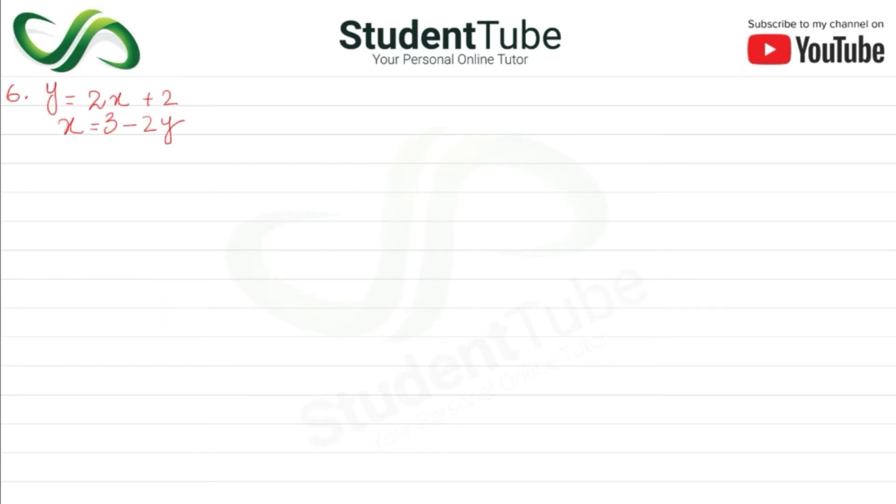First of all, we will solve this equation. We will rewrite this equation: 2x minus y is equal to minus 2.